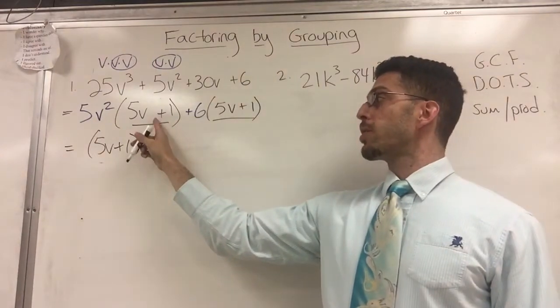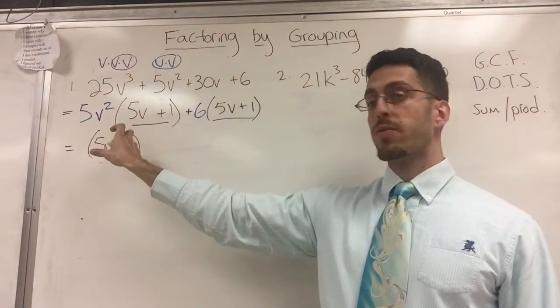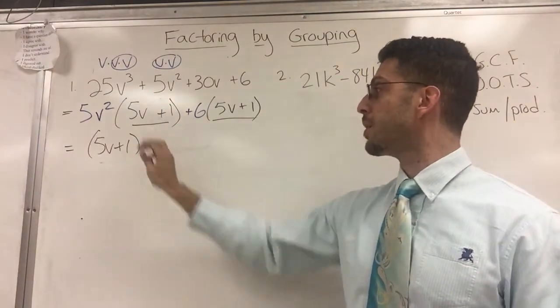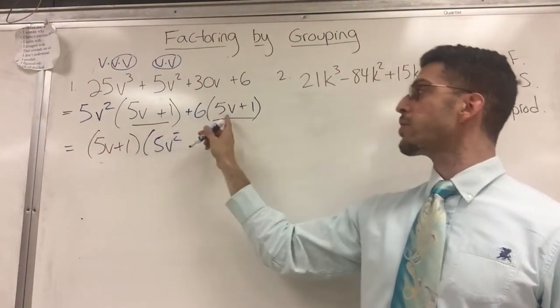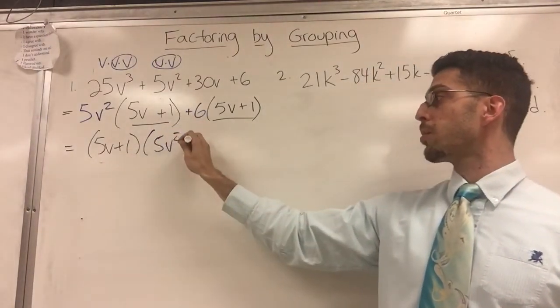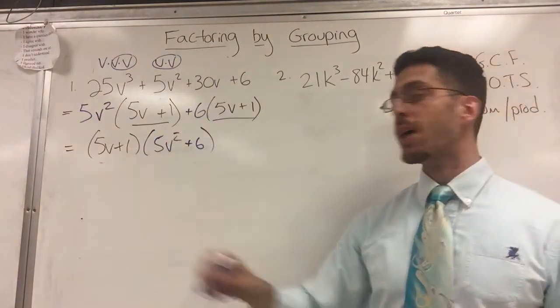Now that I've factored out a 5V plus 1, this entire 5V plus 1 goes in front. I'm left with the blue, the 5V². And this 5V plus 1 got factored out and put in front, so I'm left with the blue here. Plus 6, and now you are done.